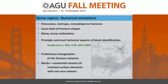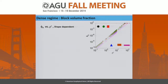We triangulate the fracture networks. The fractures are decomposed into triangles with a known orientation. We define blocks as connected clusters of oriented surface elements — because we know the orientation, they must be directed in the same direction — with non-zero volume. We do this in a systematic way and obtain results for the block volume fraction.